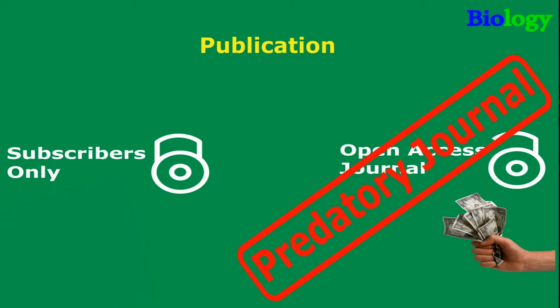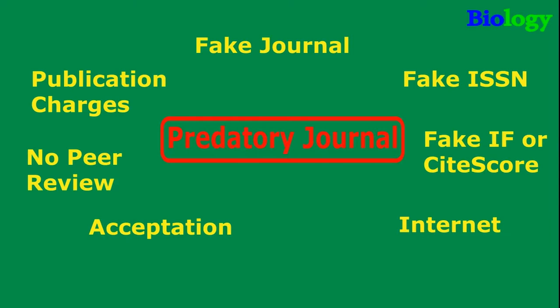Predatory journals are fake journals acting like open access journals. Sometimes they use a fake ISSN, or they use the ISSN of an indexed journal, and they present a fake impact factor and cite score. Those journals exist only on the internet — there is no printed format. The acceptance rate is 100% but there is no peer review, just some simple edits. And of course, you have to pay to publish. If you publish in those journals your article will stay on the predatory journal's website and will not be cited.